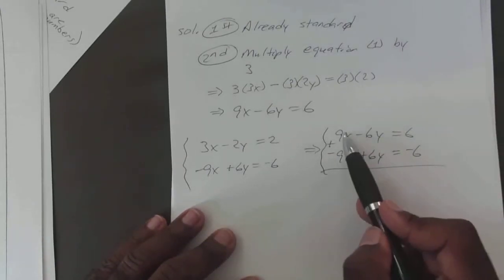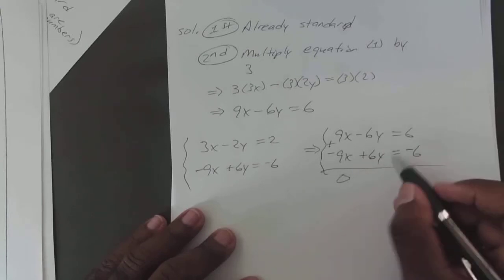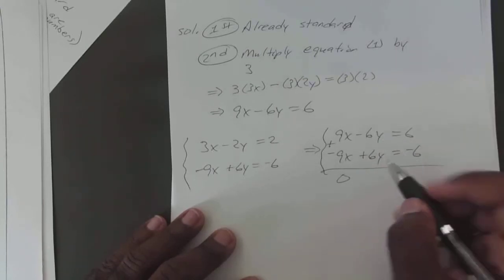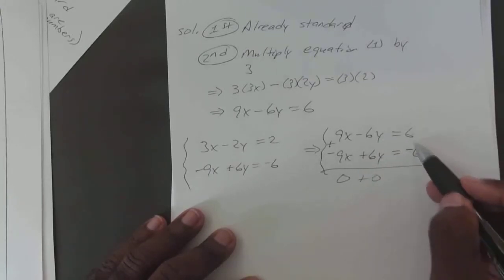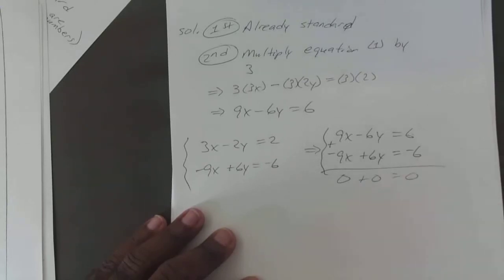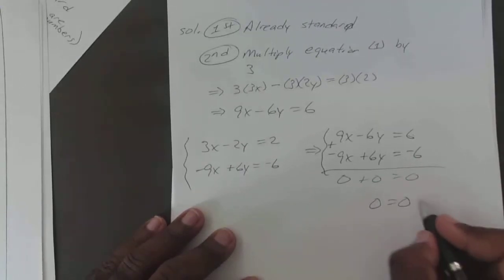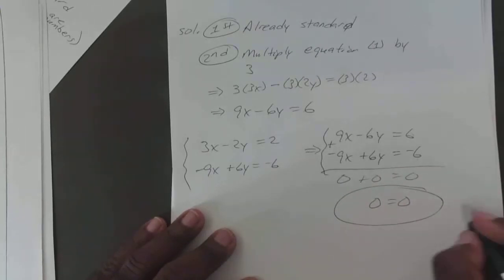So if we add everything together, 9x minus 9x is 0, negative 6y plus 6y is 0, 6 minus negative 6 is 0, we end up with 0 equals 0, which is true.